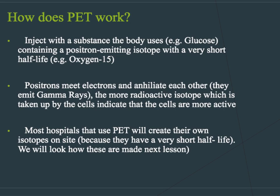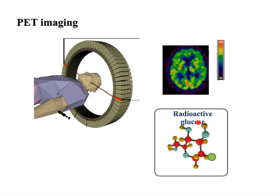Most hospitals that use PET will create their own isotopes on site because they have a very short half-life. Here we have an example of our radioactive glucose with the radioactive isotope, and our PET scanner. You can see it's a 360-degree scanner as the gamma rays will be released in all directions. Here we have a brain scan showing levels where the radioactive isotope has been taken up more — these are the red areas.